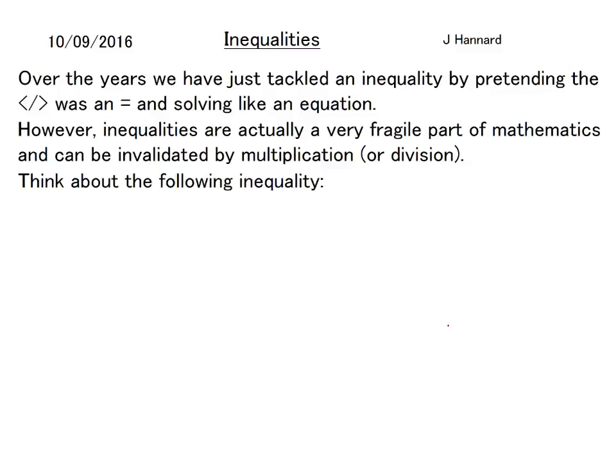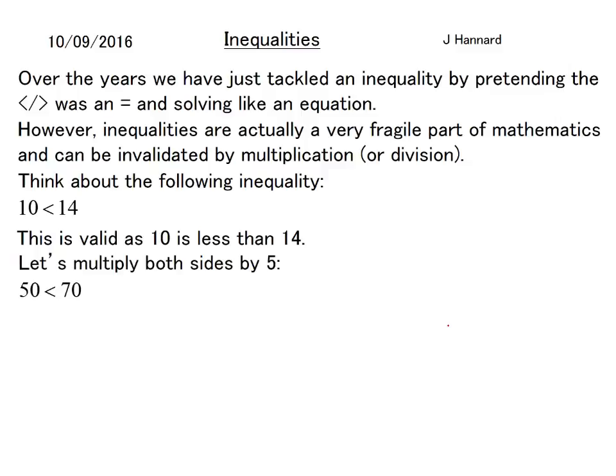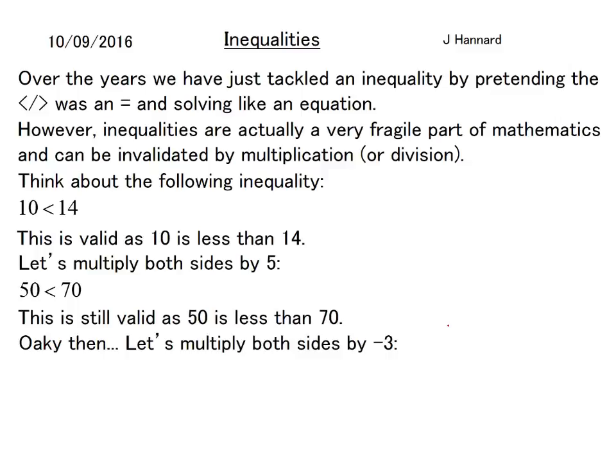Think about the following inequality: 10 is less than 14. That's valid because 10 is less than 14. Let's multiply both sides by 5: 50 is less than 70. This is still valid because 50 is less than 70. Okay then, let's multiply both sides by negative 3: negative 30 is less than negative 42. Now then, this is invalid because negative 30 is greater than minus 42. If you think about a number line thermometer, minus 42 is down here, minus 30 is up here. So as you can see, minus 30 is definitely greater than minus 42. So that's invalid.